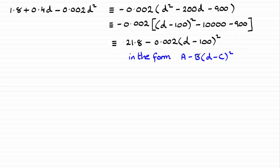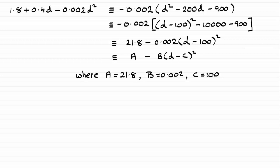OK, so you can see it's in this form here. So I'll just take that away. And we can write that it's identical then to a minus b all times d minus c squared. Where a is 21.8, b is 0.02 and c is 100.